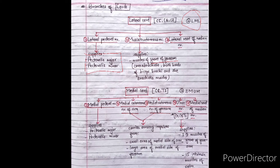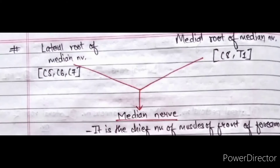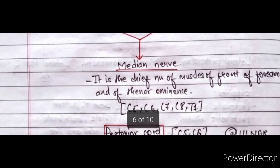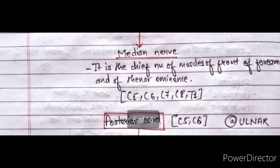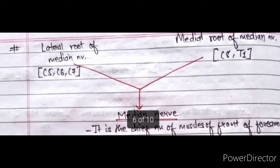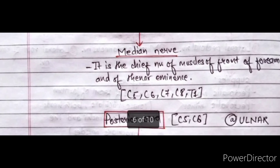The ulnar nerve supplies one and a half muscles of the front of the forearm and 15 intrinsic muscles of the palm. The lateral root of median nerve and the medial root of median nerve both join to form the median nerve. The median nerve is the chief nerve of the muscles of the front of the forearm and of the thenar eminence. Since the lateral root has value C5, C6, C7, and the medial root has value C8 and T1, the root value of the median nerve is C5, C6, C7, C8, and T1.